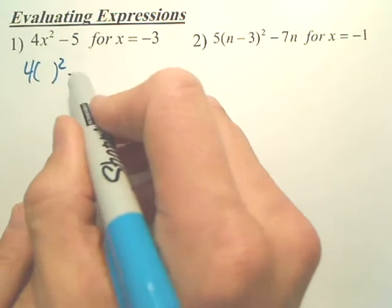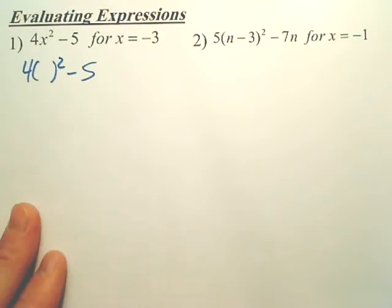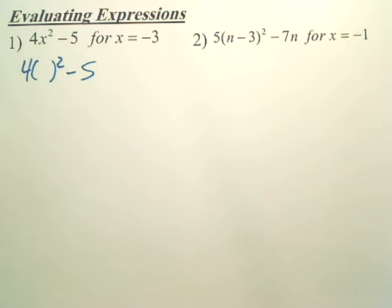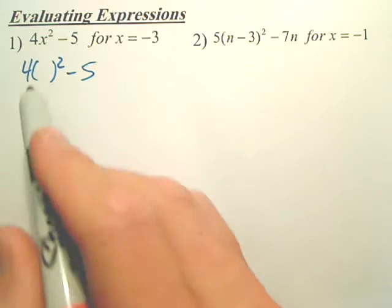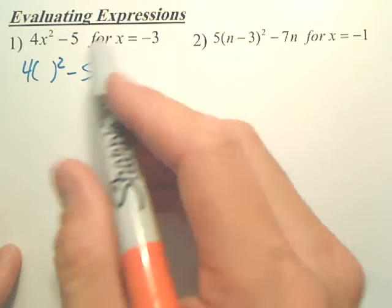So I put, instead of my X, I'm going to put a big blank. And in that blank, what am I going to put? Negative 3.